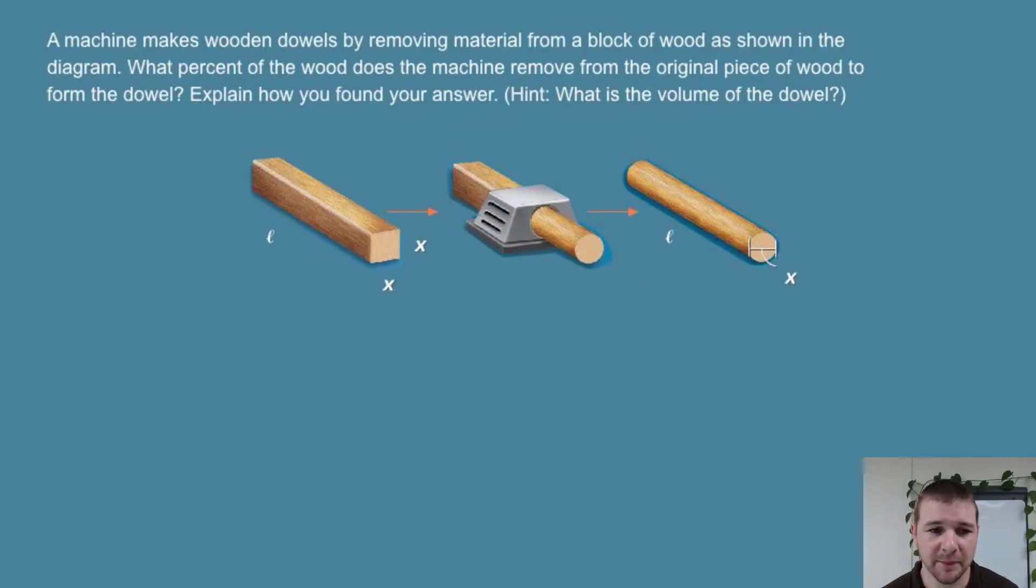You'll solve it for the lesson. A machine makes wooden dowels by removing material from a block of wood as shown in the diagram.